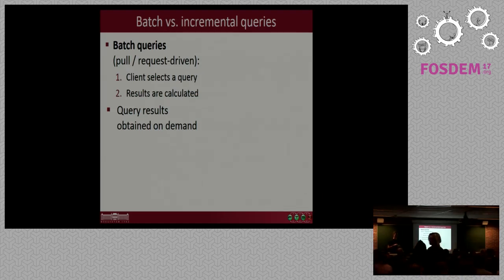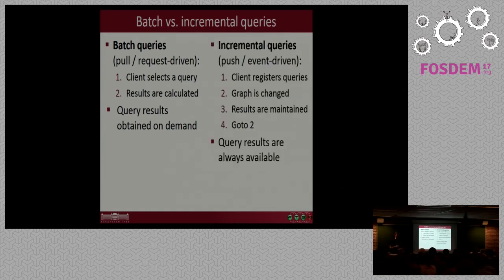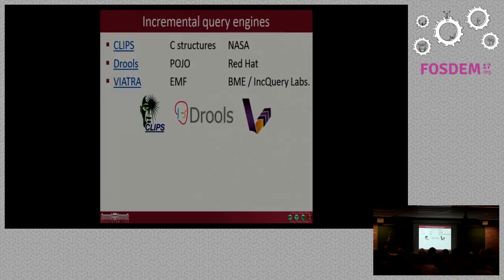So, to summarize, usually graph databases and relational databases use batch queries, which are more request driven. There is a client and the client issues a query. The database calculates the query results and it returns the results. The results are obtained on demand. So the client has to specifically ask the database for the query results. In contrast, incremental queries are more event driven. So the client registers a set of queries in advance, and then for each change in the graph, the results are maintained. And this is a continuous loop. The query results are always available for the client.